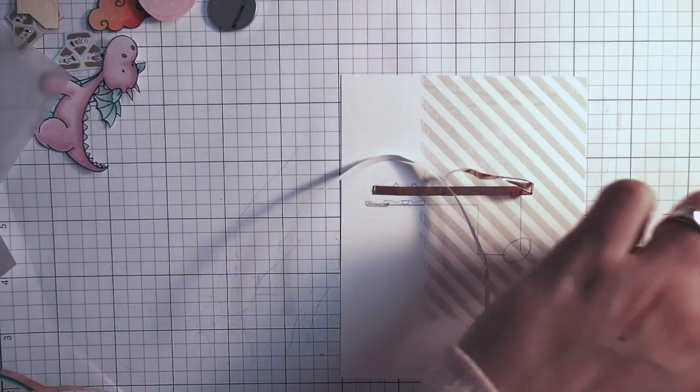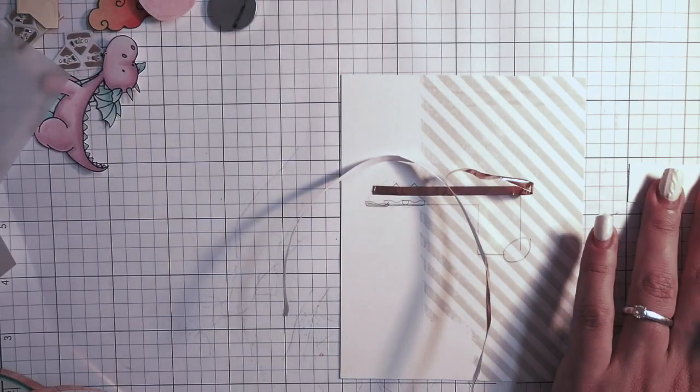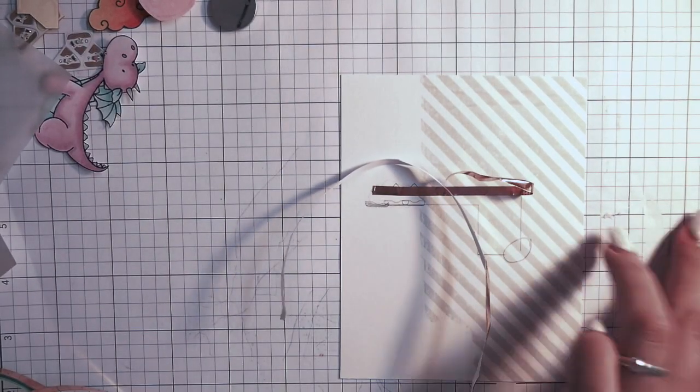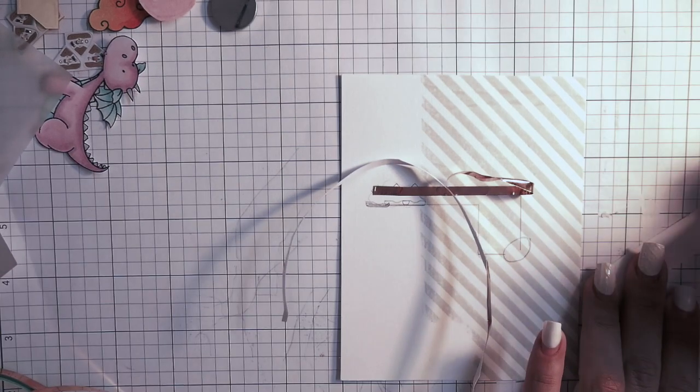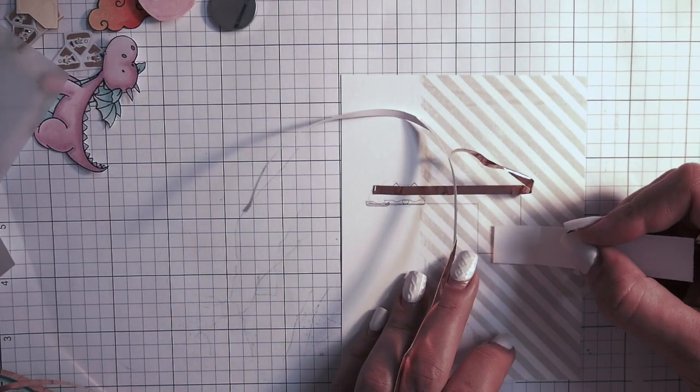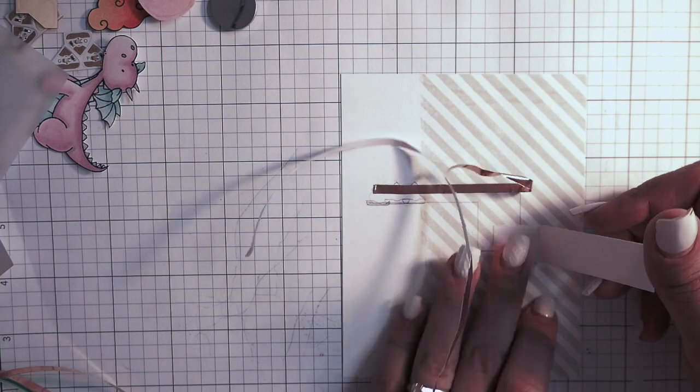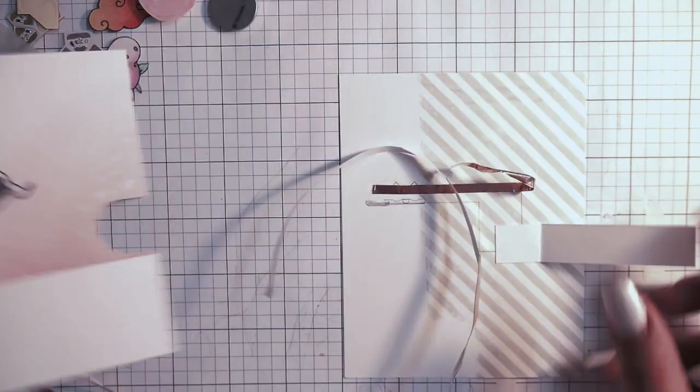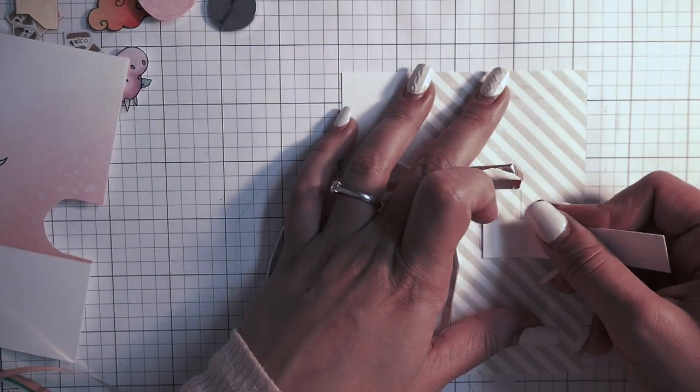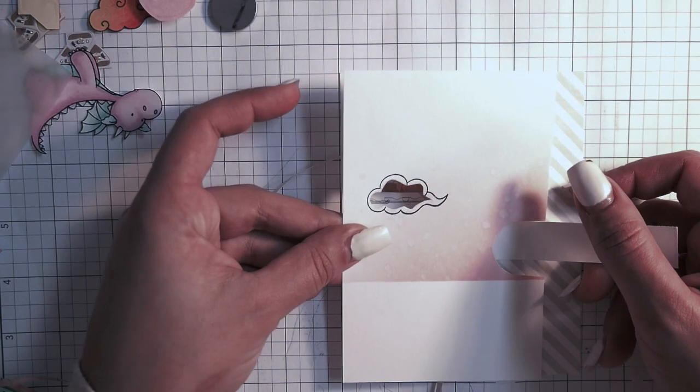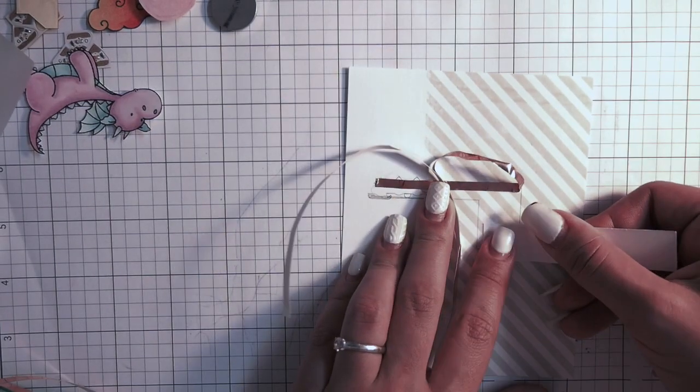Now I'm using my copper tape to tape everything down, and this white strip of cardstock will be my switch later. This is how we always do it, so nothing fancy, just a little cute card with some extra lightning. I find this image is really perfect for this kind of card.